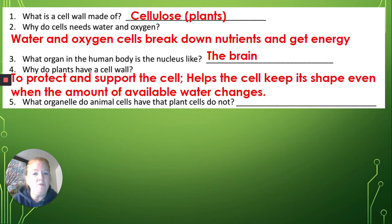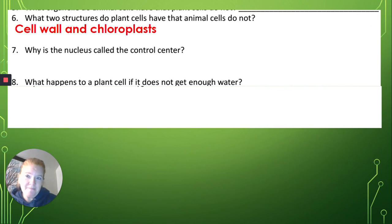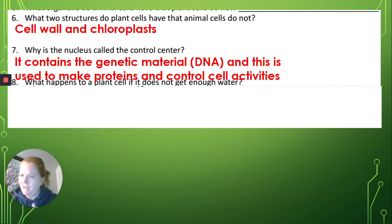What organelle do animal cells have that plant cells do not? Do you remember? Lysosomes. What two structures do plant cells have that animal cells do not? Do you remember? Cell wall and chloroplasts. Why is the nucleus called the control center for the brain? Why? Well, it contains the genetic material or DNA, and this is used to make proteins and control really everything that's going on inside the cell.